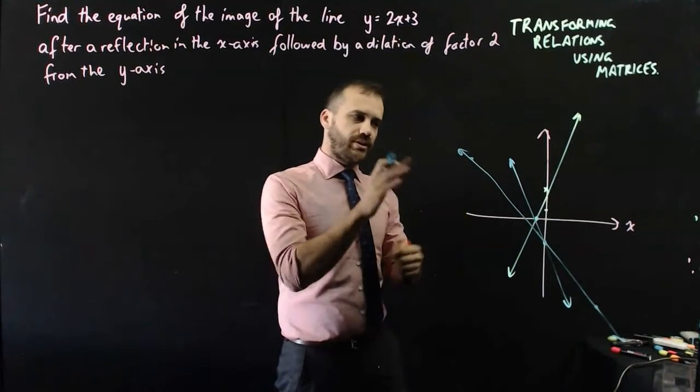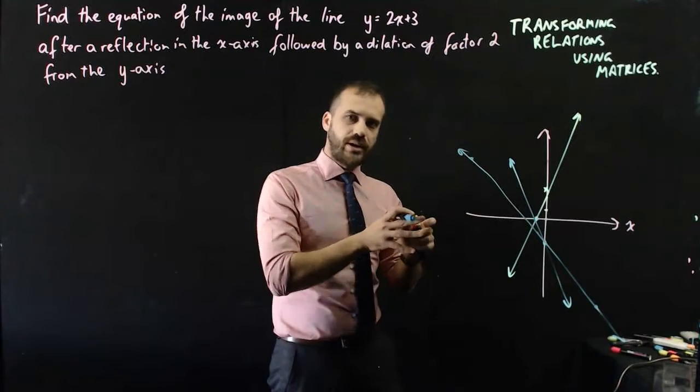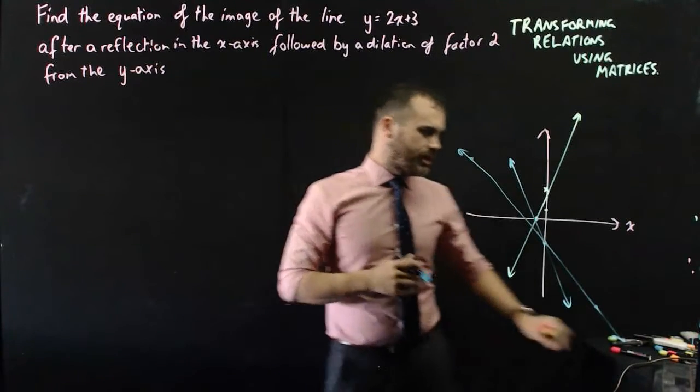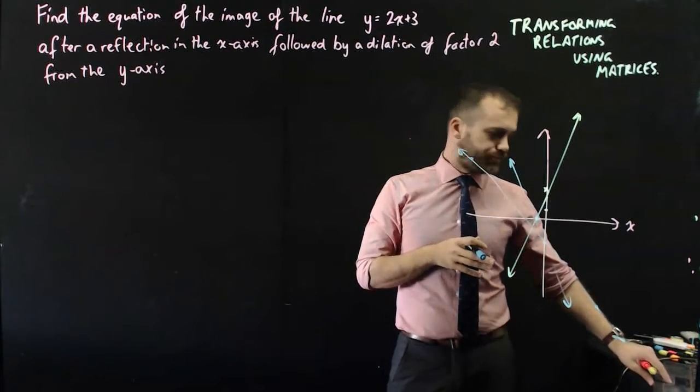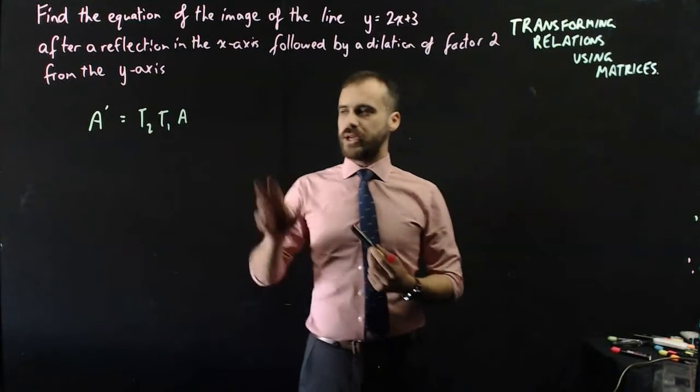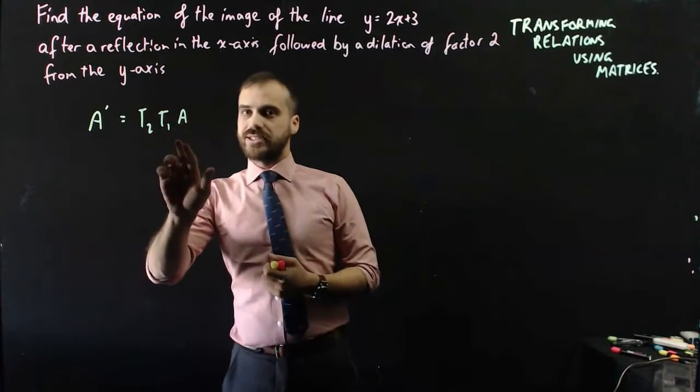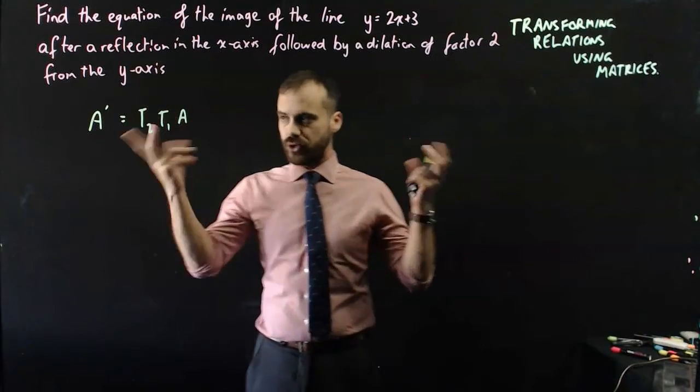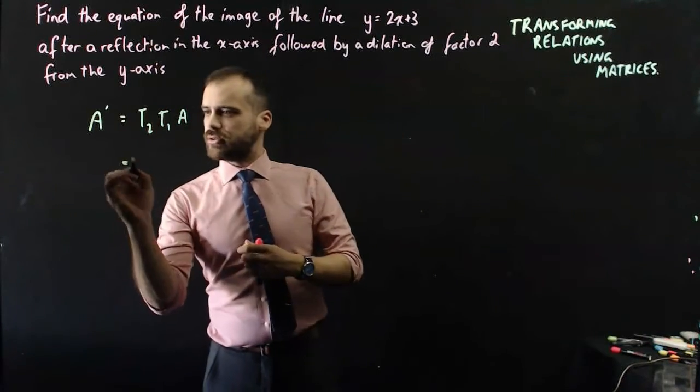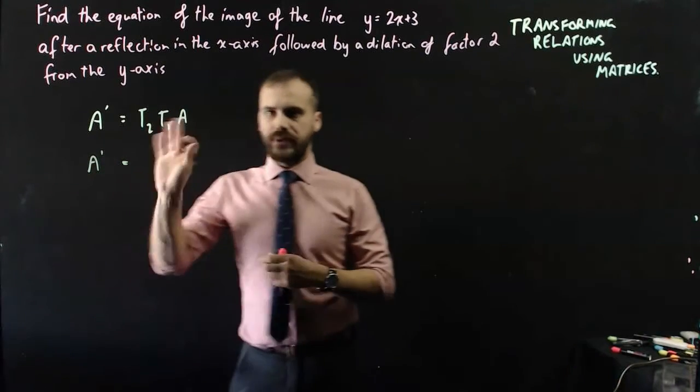There you go. Now I could come up with the equation of that line just, I think, as well, but let's use matrices now to figure out how to do that properly. Now in this case there's two transformation matrices, so we're going to need those in there, but we need to make sure that the second transformation comes first.